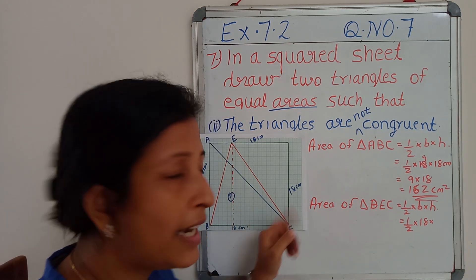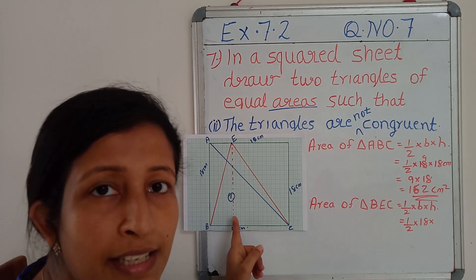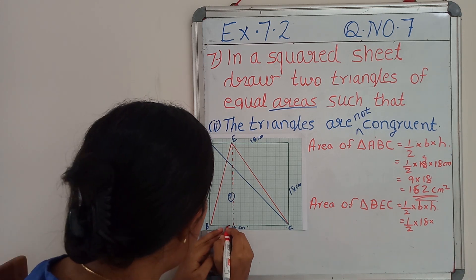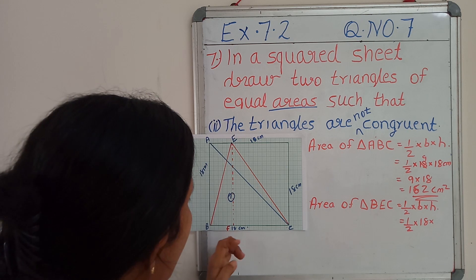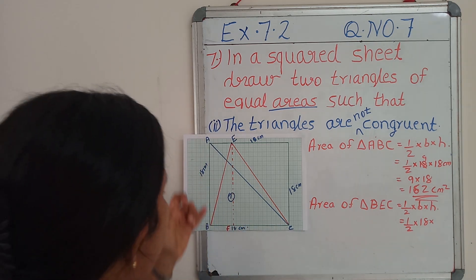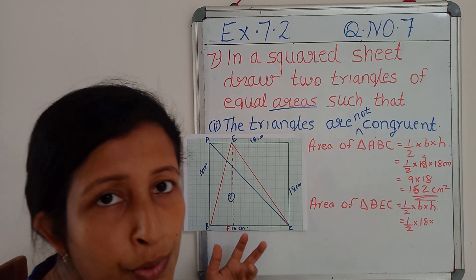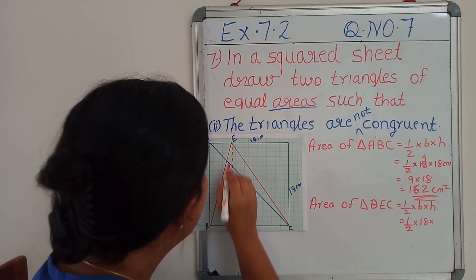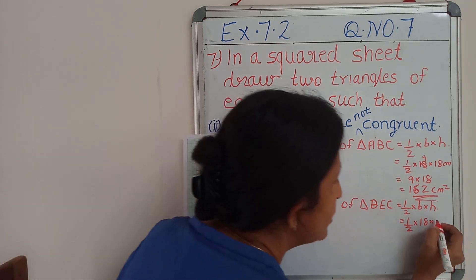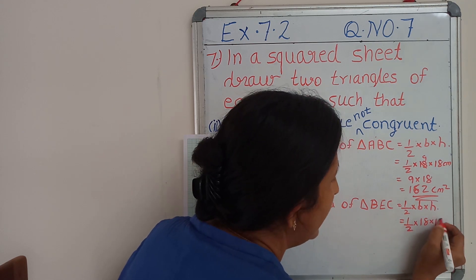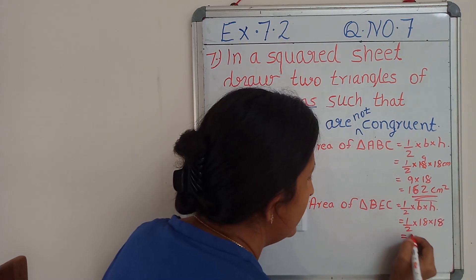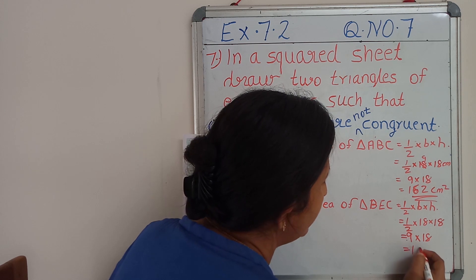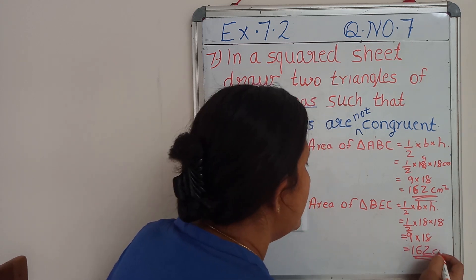This dotted line will give you the height of this triangle. If I am giving the name F here, EF should be equal to BC. Why? Because it is a square and we had drawn a particular line. So EF is the height, and I am going to write down 18 here. So 9 into 18 — again the value is 162 cm square.